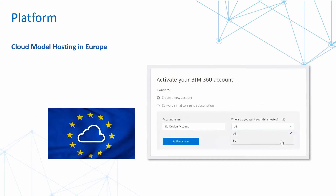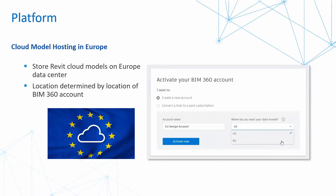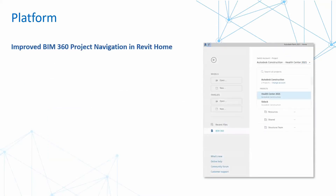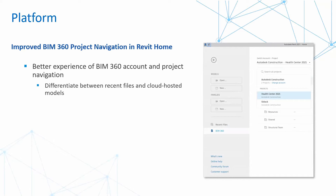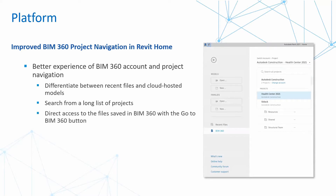The next feature is cloud model hosting in Europe. We can now store Revit cloud models on a European data center, not just the US, with location determined by the location of BIM 360 accounts. We also have an improved BIM 360 project navigation in the Revit home — a better experience for BIM 360 account and project navigation — including the ability to see differences between recent files and cloud hosted models, search long lists of projects, and have direct access to files saved in BIM 360 with the go to BIM 360 button option, plus easy access to help links.